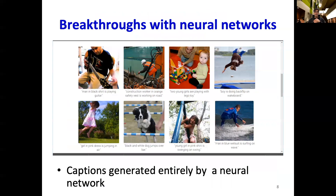As it turns out, deep learning models excel at multi-modal tasks as well. Here's an example of a model that accurately generates captions for provided images. This task requires the model to understand the scene — correctly identifying the various objects, such as this man and his guitar in the first picture — the relationship between the objects, the man playing the guitar, and generate coherent text captions for the image. For example: 'Man in black shirt is playing guitar.'